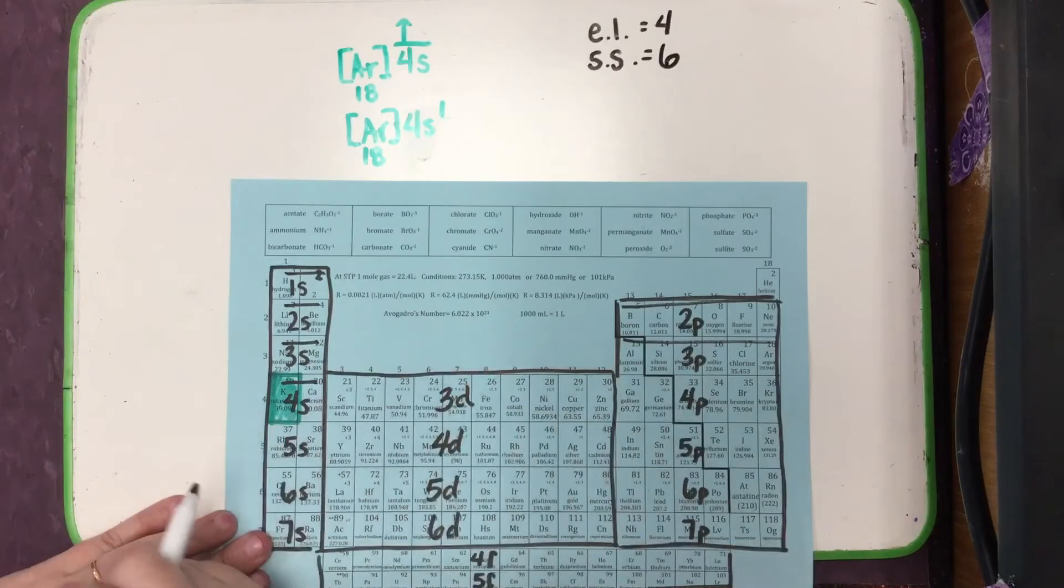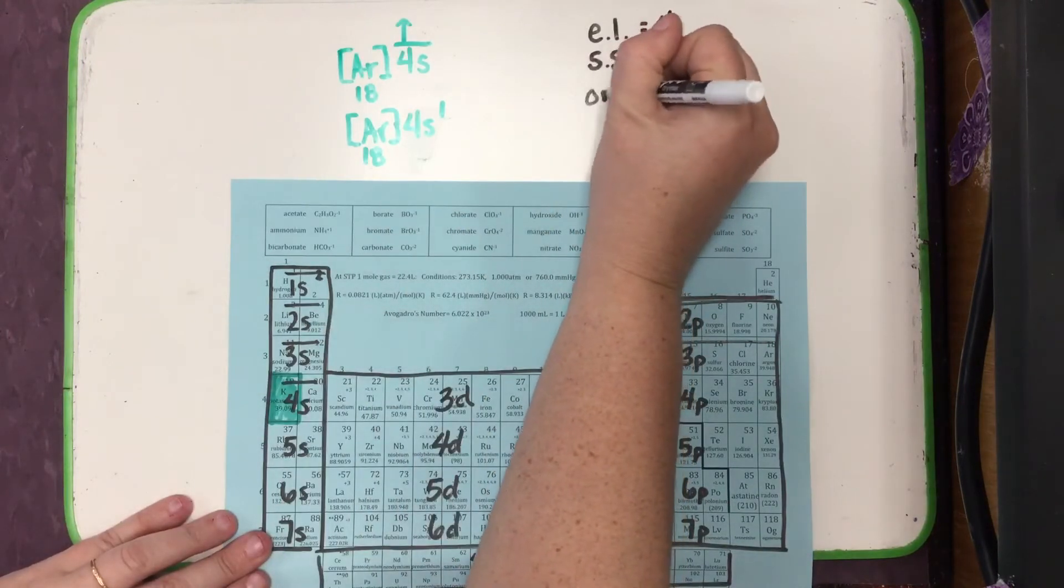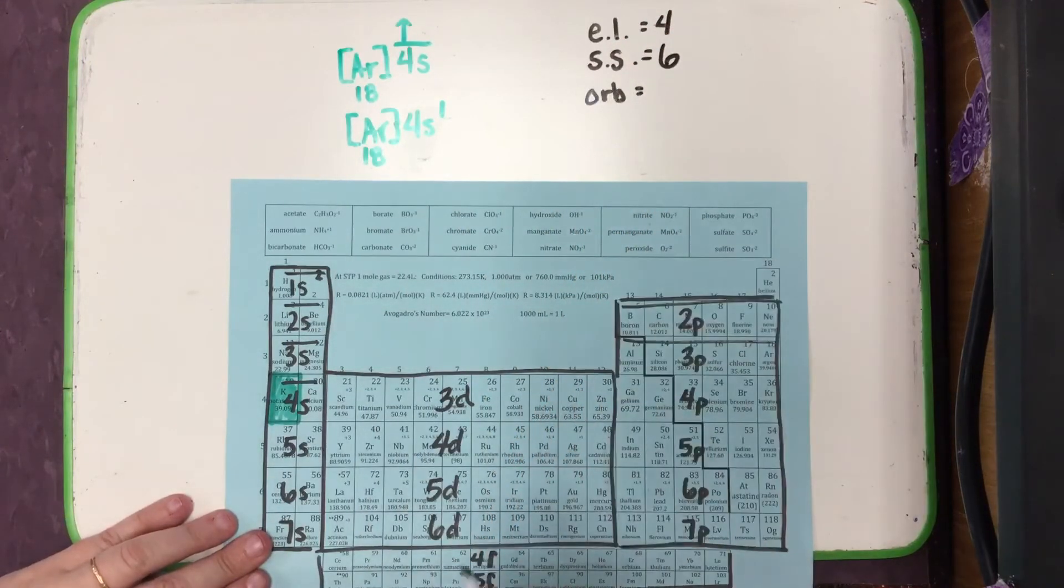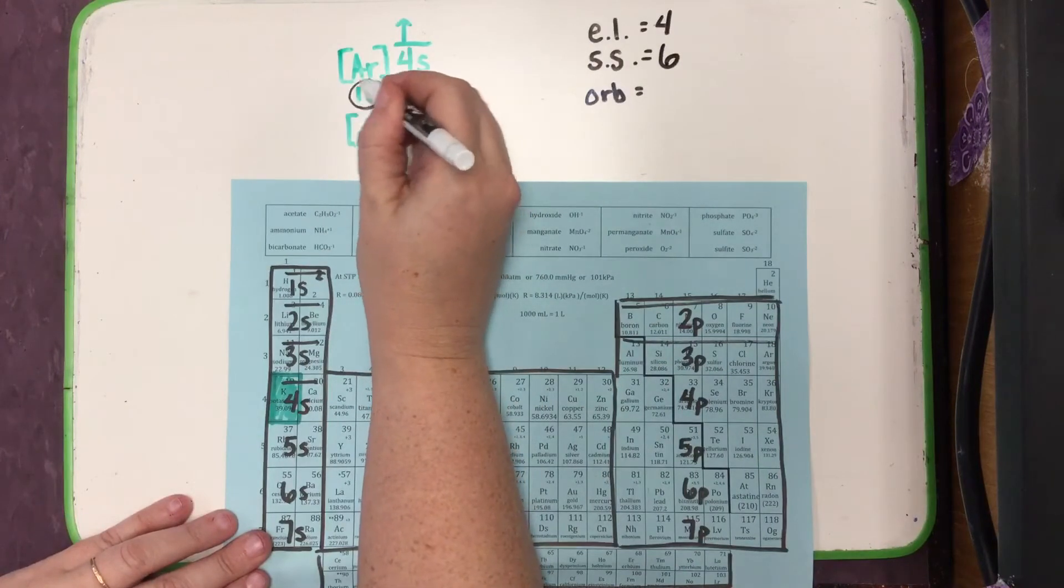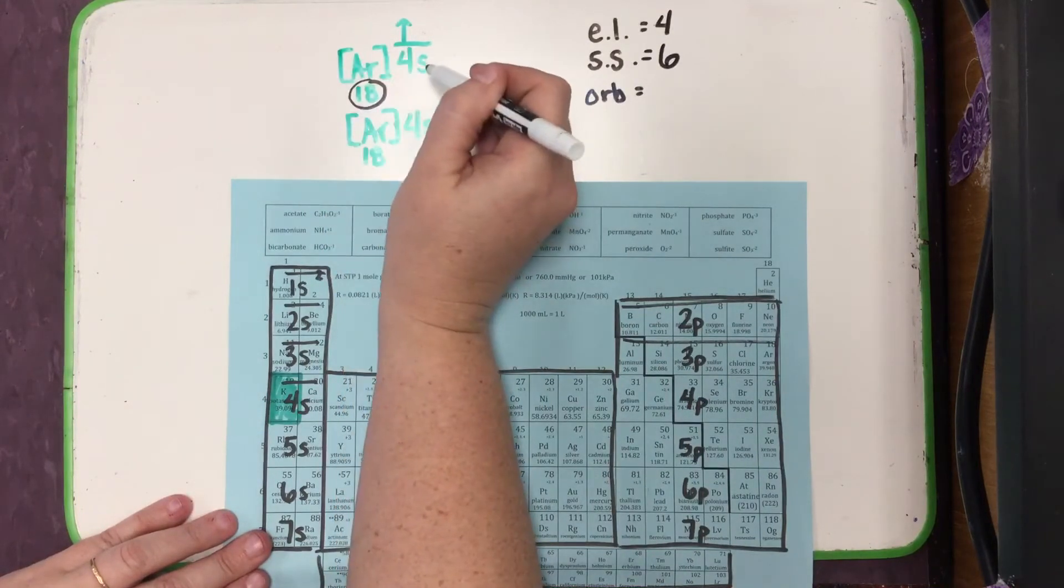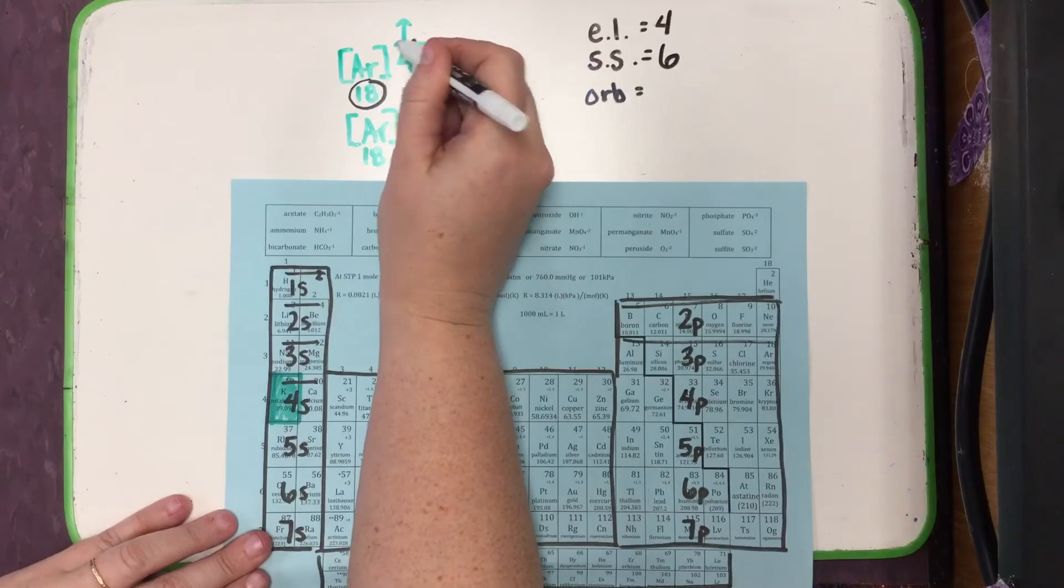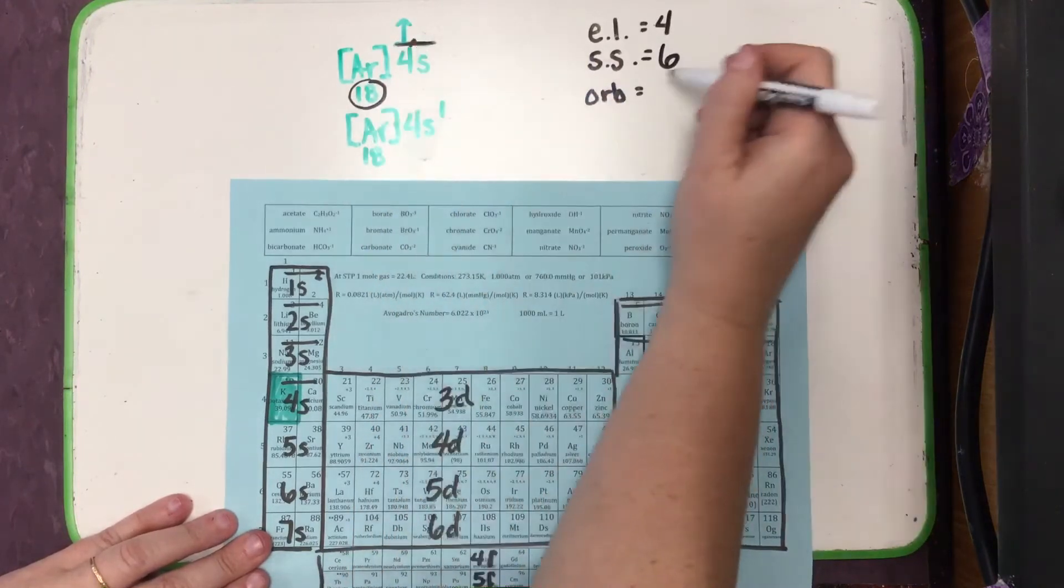So the sixth region. And we can figure out orbitals. Remember the rule we talked about in the last lesson was we take the noble gas divided by 2. So 18 divided by 2 is 9, and then just add in any of these lines. So that would be a total of 10.